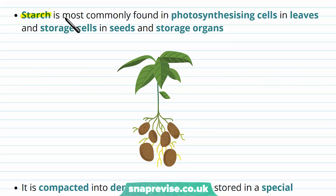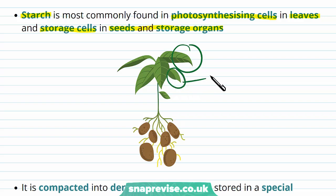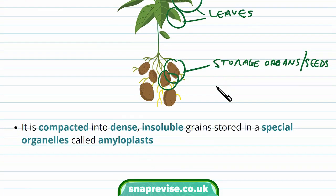Starch is normally found in particular types of cell. It's found in photosynthesizing cells — those that carry out photosynthesis — which are in the leaves, and also in storage cells in seeds and storage organs. So we find starch in leaves and in storage organs or seeds.